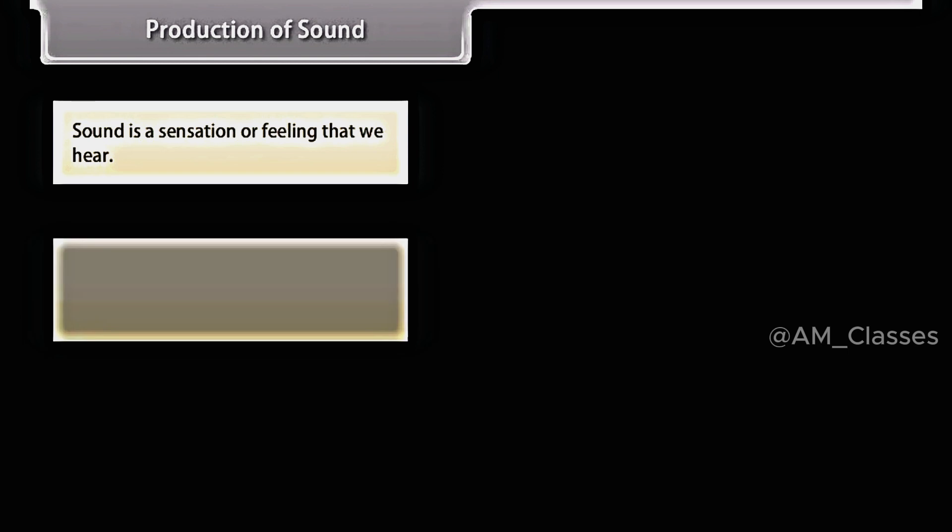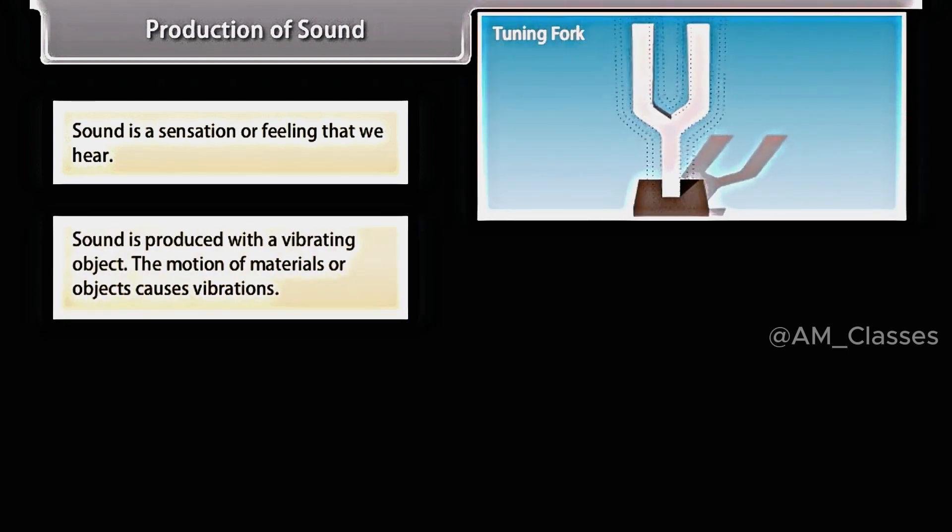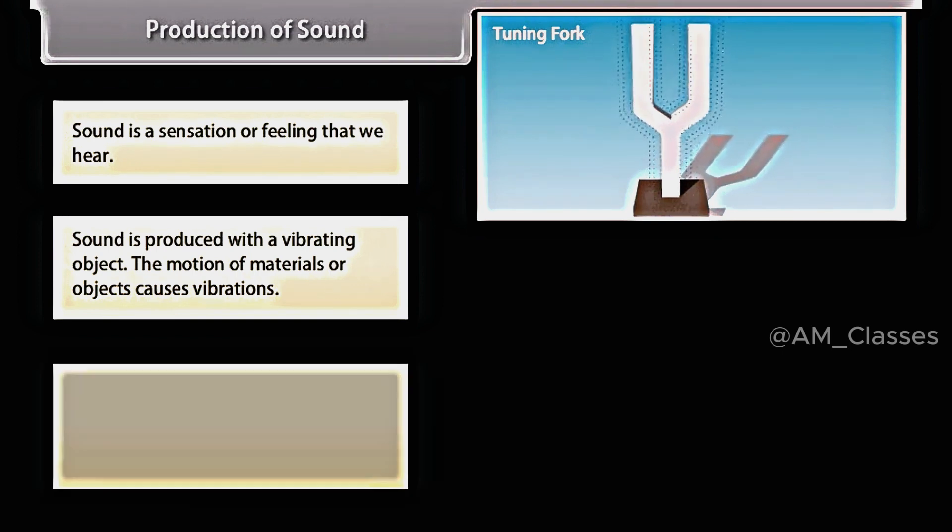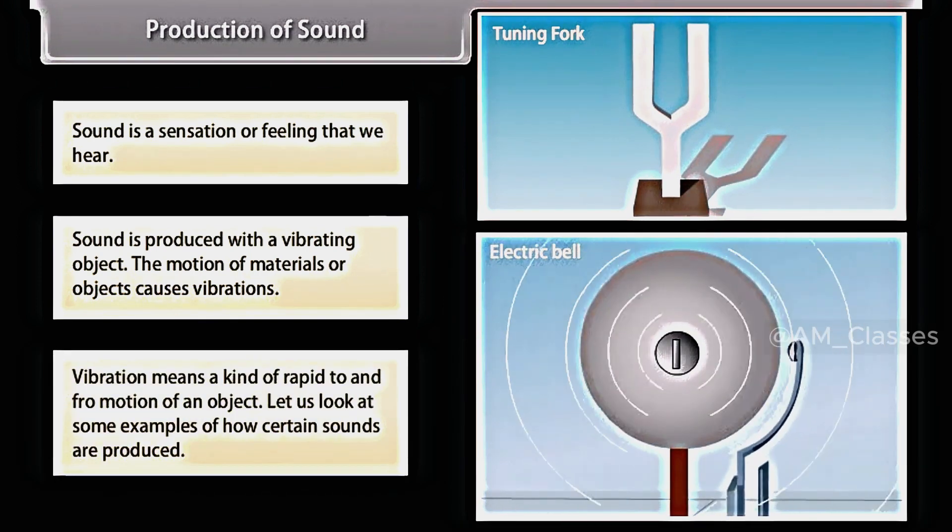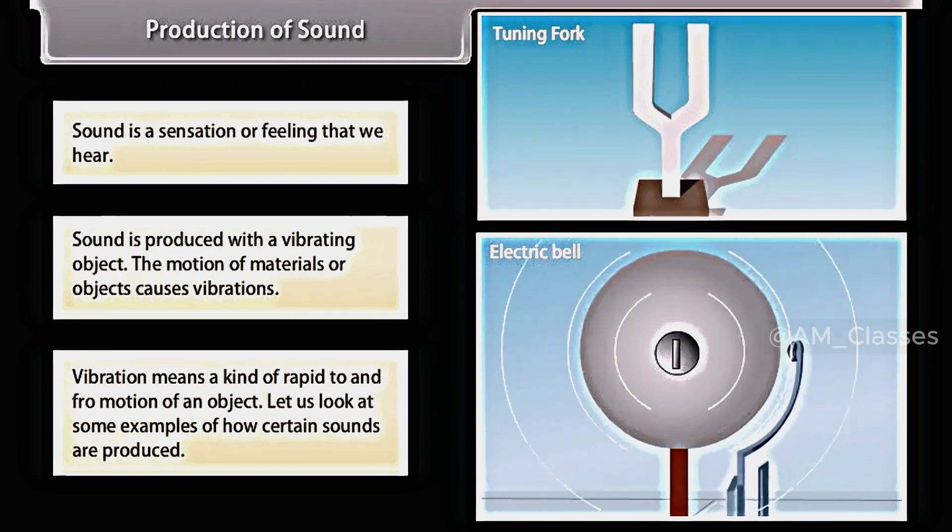Production of sound. Students, we know that sound is a sensation or a feeling that we hear. Sound is produced with a vibrating object. The motion of materials or objects causes vibrations. Vibration means a kind of rapid to and fro motion of an object.